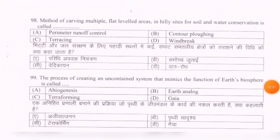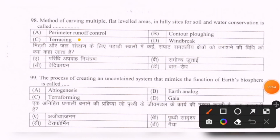Next question: The method of carving multiple flat leveled areas in hilly sites for soil and water conservation is called — options are: perimeter runoff control, contour plugging, terracing, windbreak. The correct option is C — terracing.